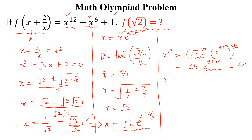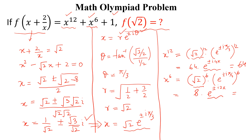Similarly, we calculate x^6 = (√2)^6 · (e^(±iπ/3))^6 = 8 · e^(±iπ) ... and x^6 = e^(±i·2π) = 1, so x^6 = 8. Therefore, x^12 + x^6 + 1 = 64 + 8 + 1 = 73. This is the required answer.